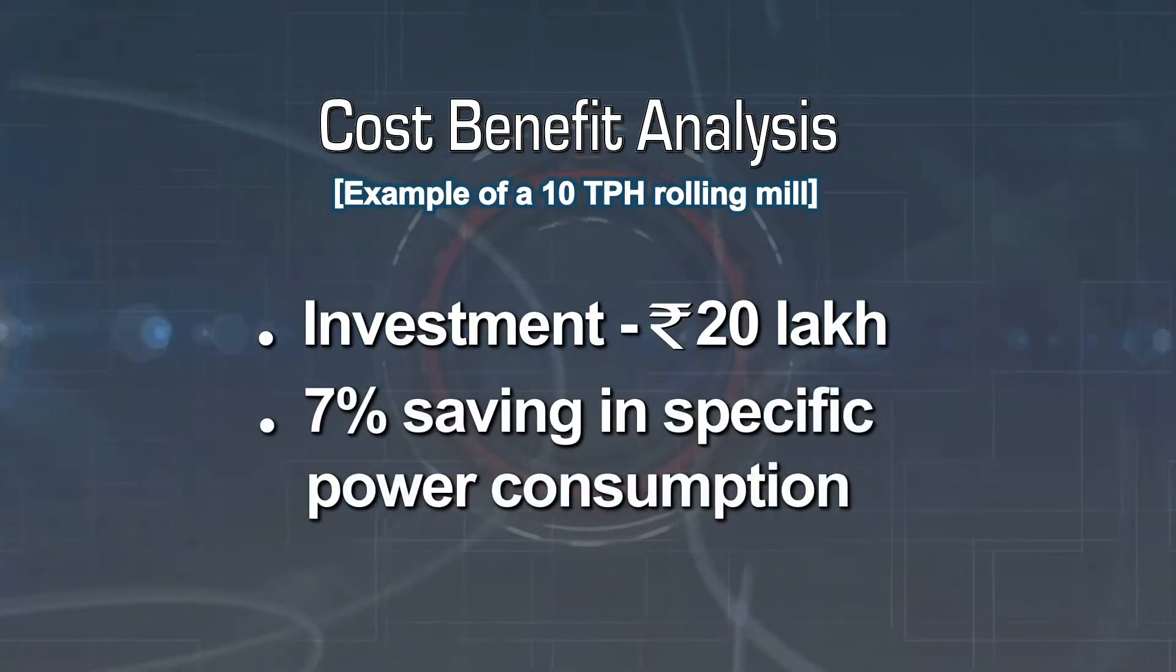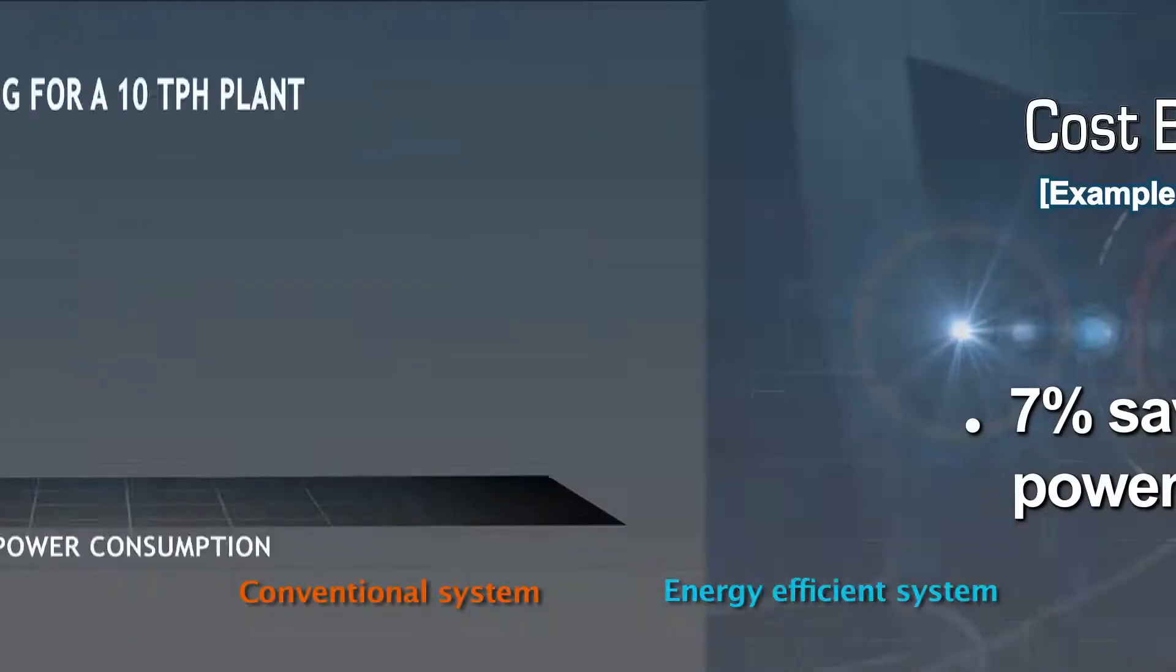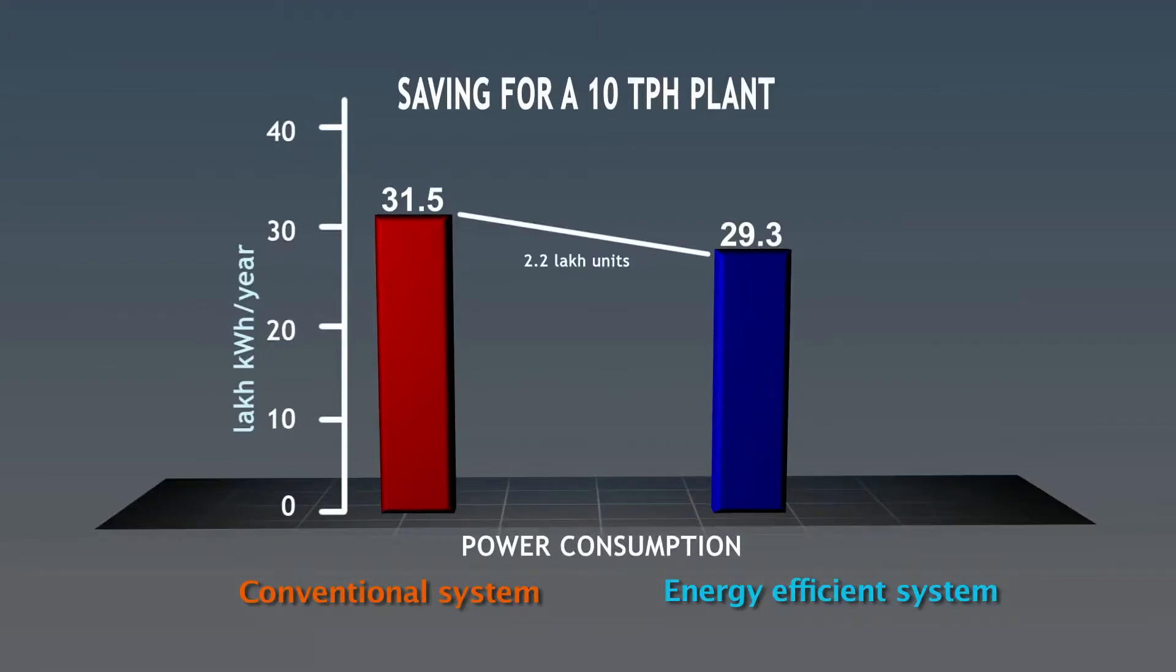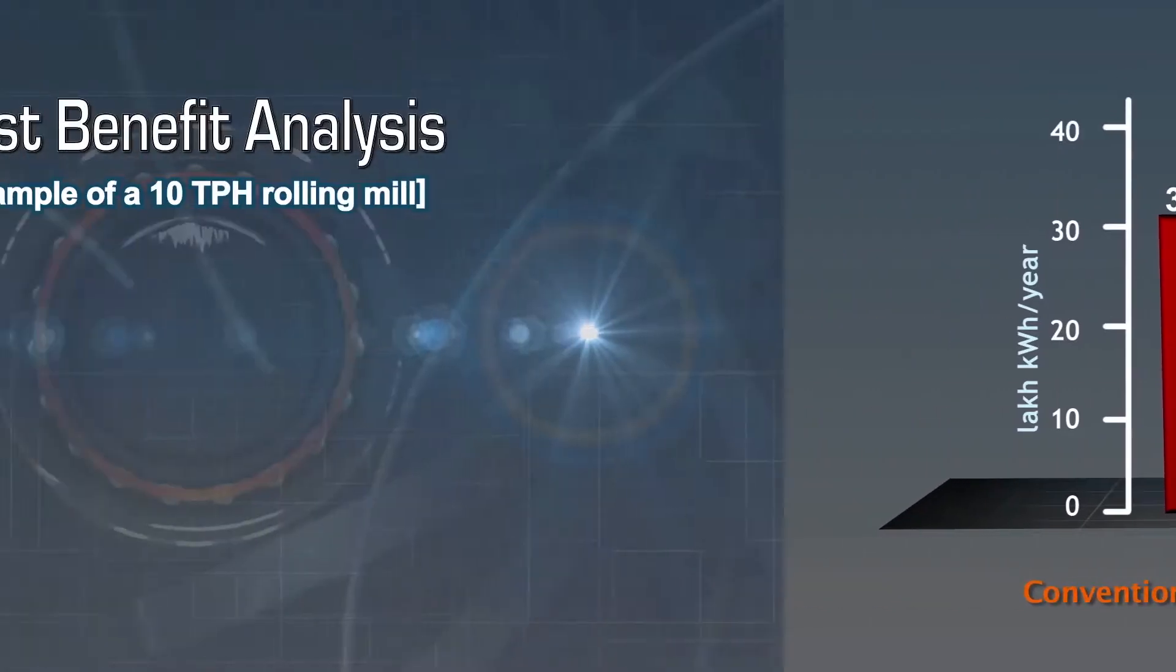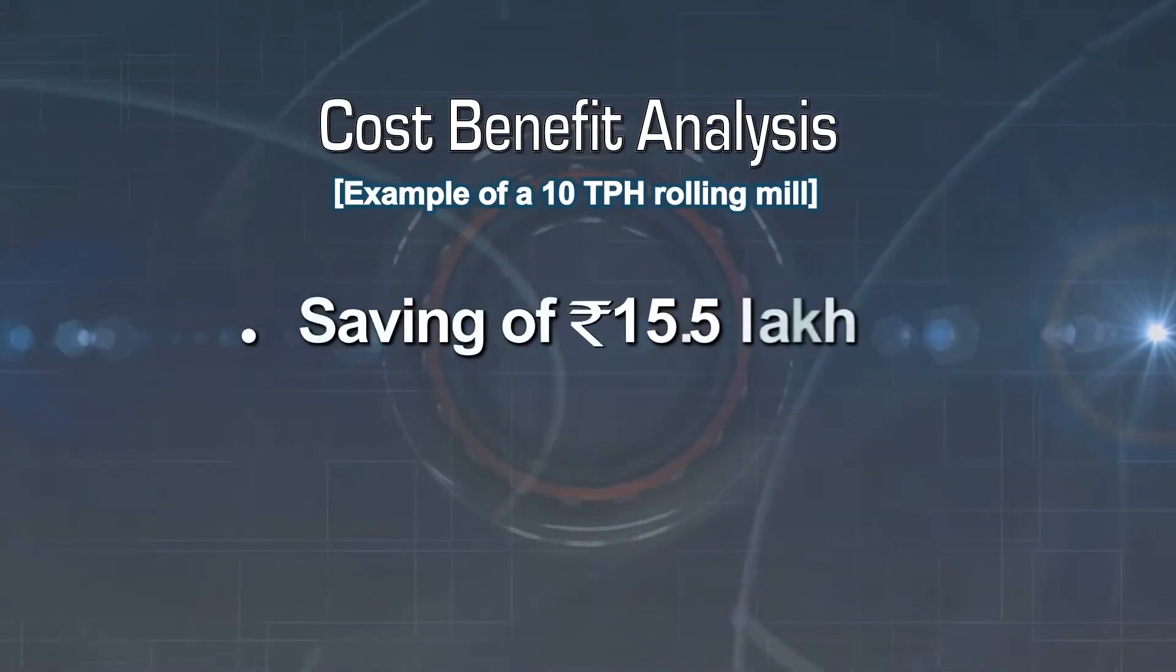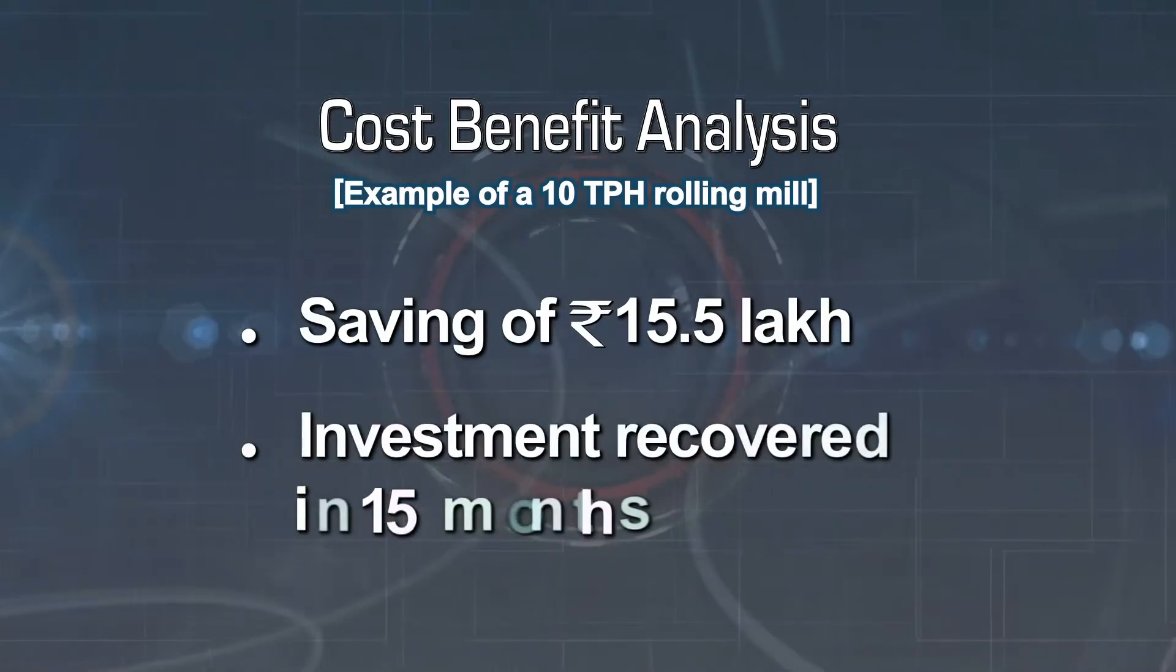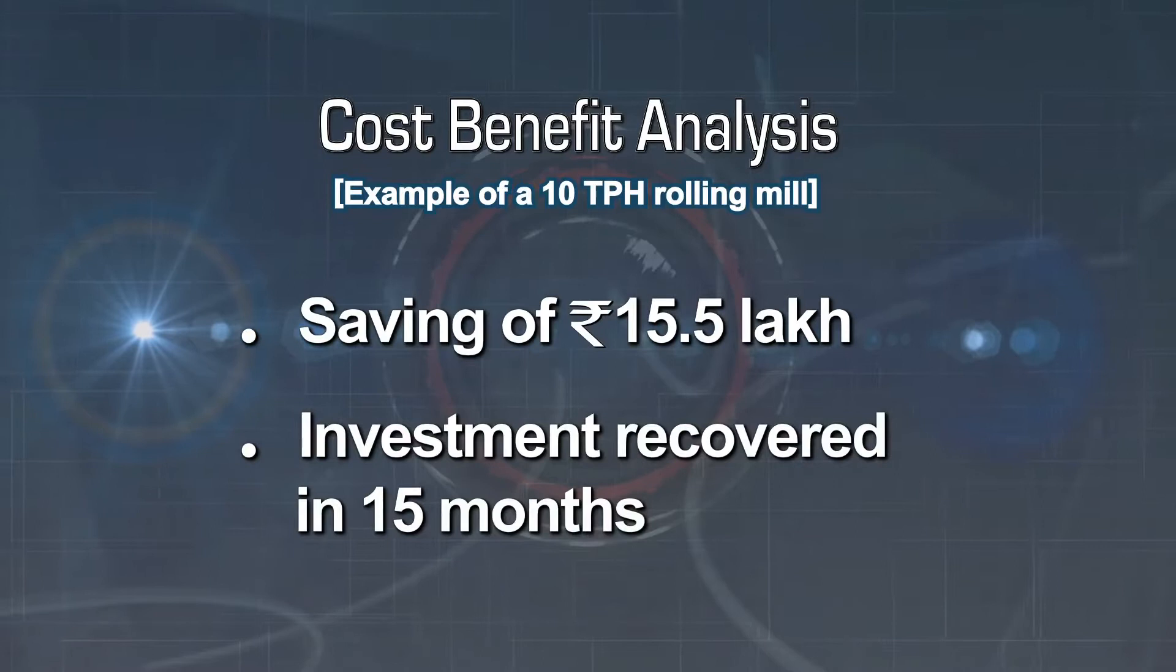The changeover will lead to a saving in specific power consumption by 7%. Annual power saved for the 10 TPH plant would be around 2.2 lakh units of electricity, or 220,500 kilowatt hours, which implies 15.5 lakh rupees cost saving annually. Thus, the investment can be recovered in close to 15 months.